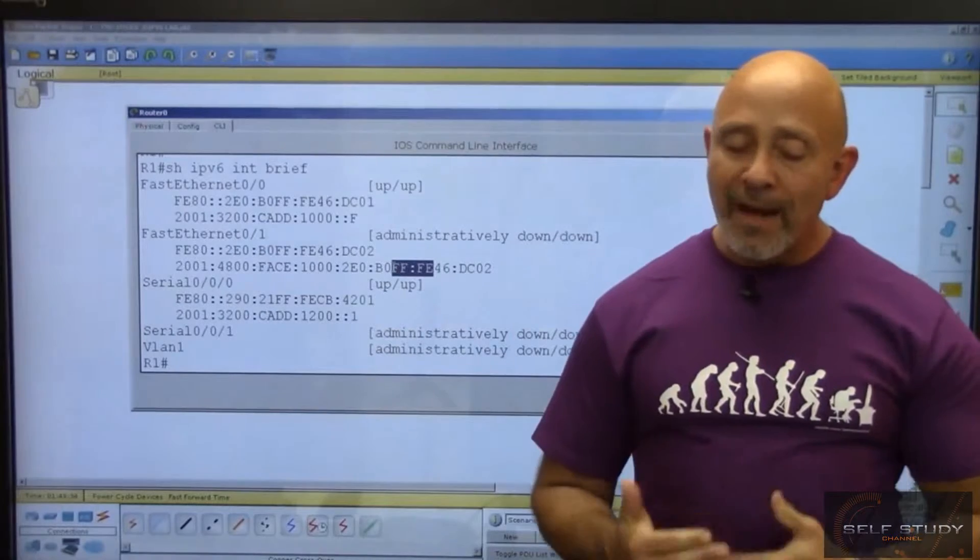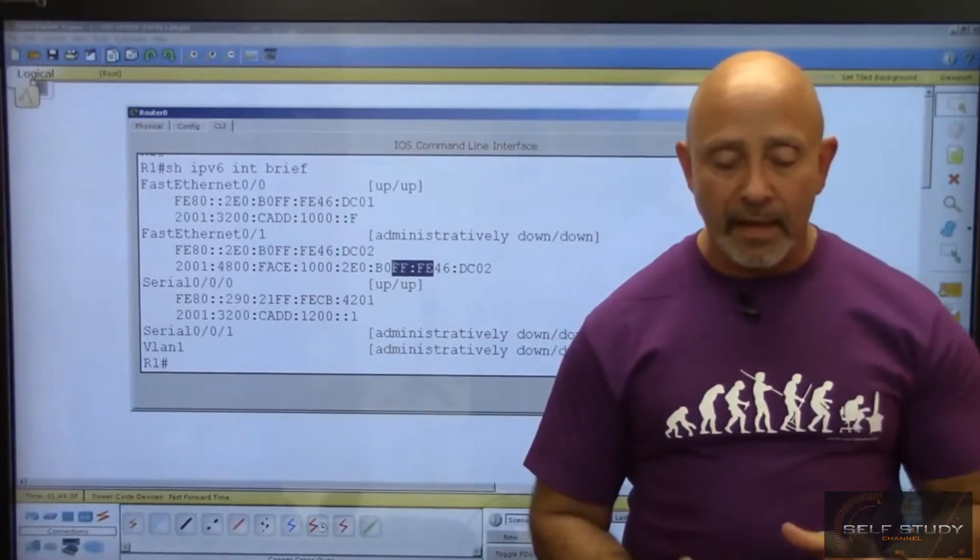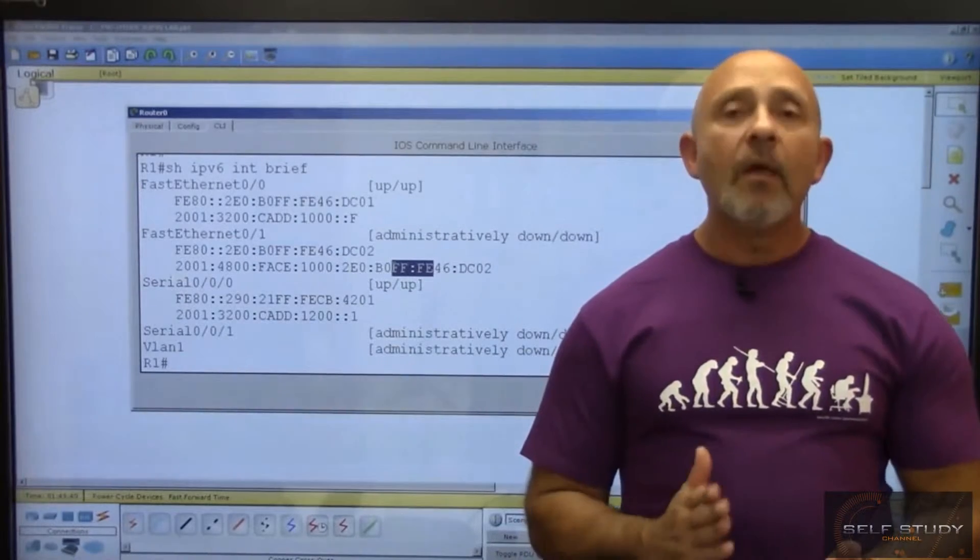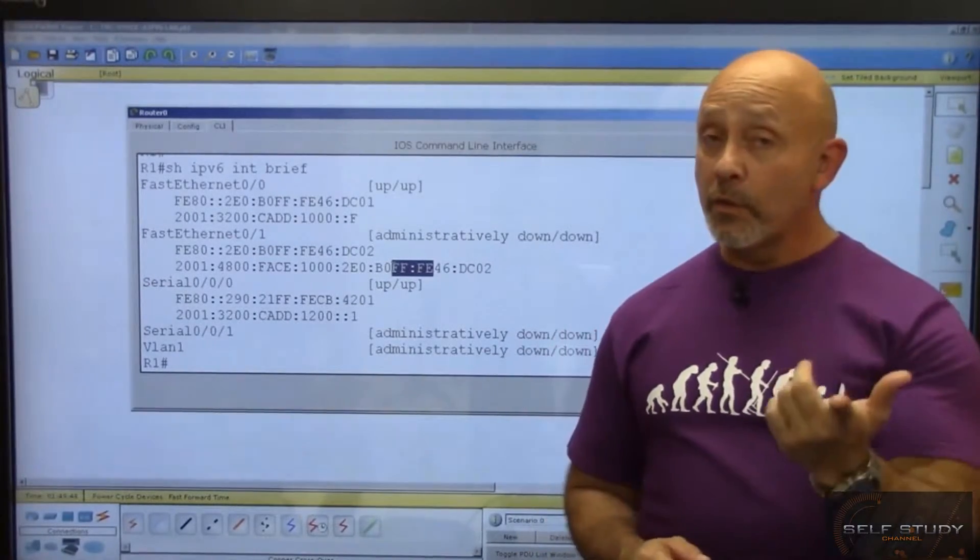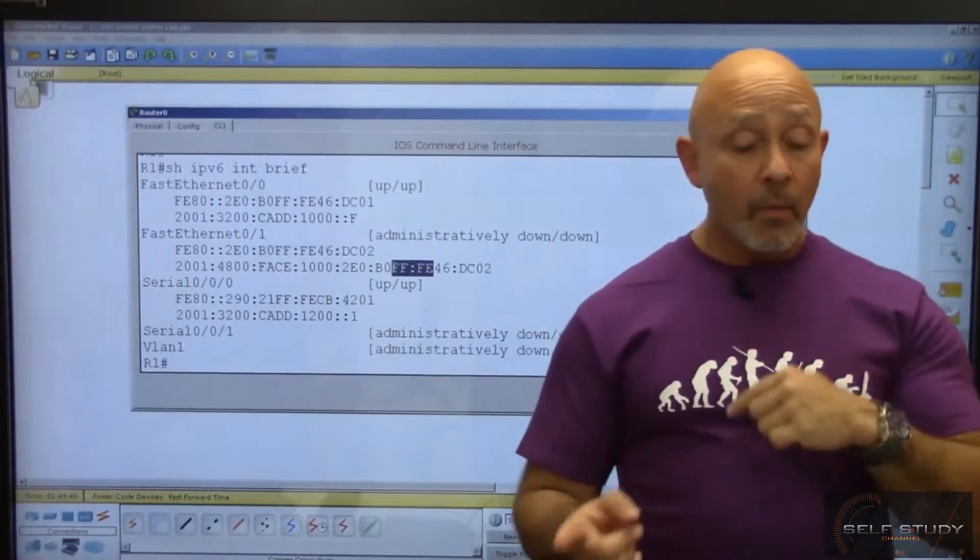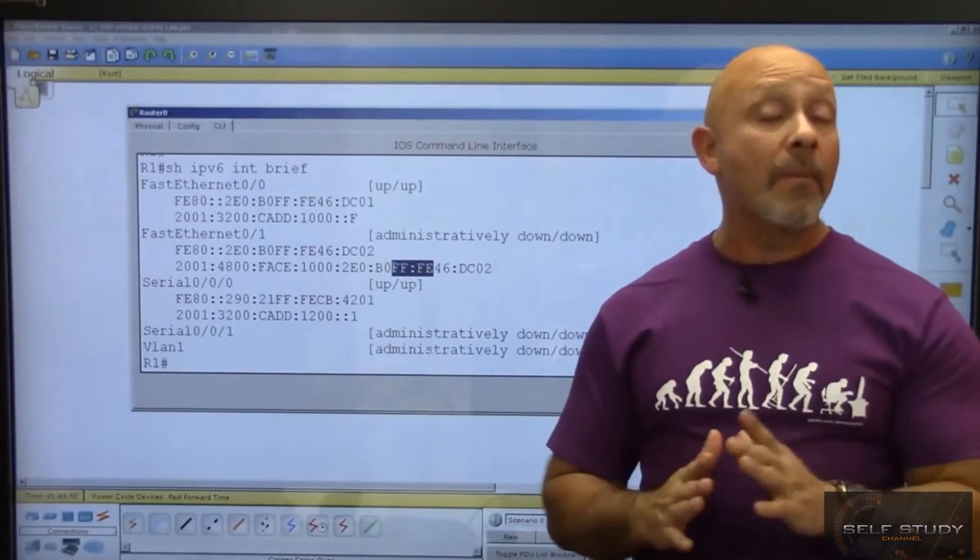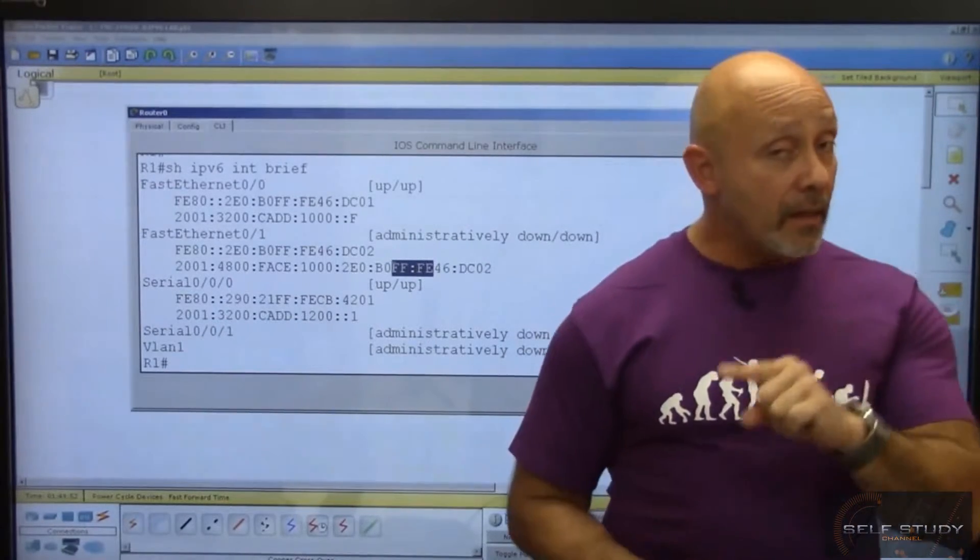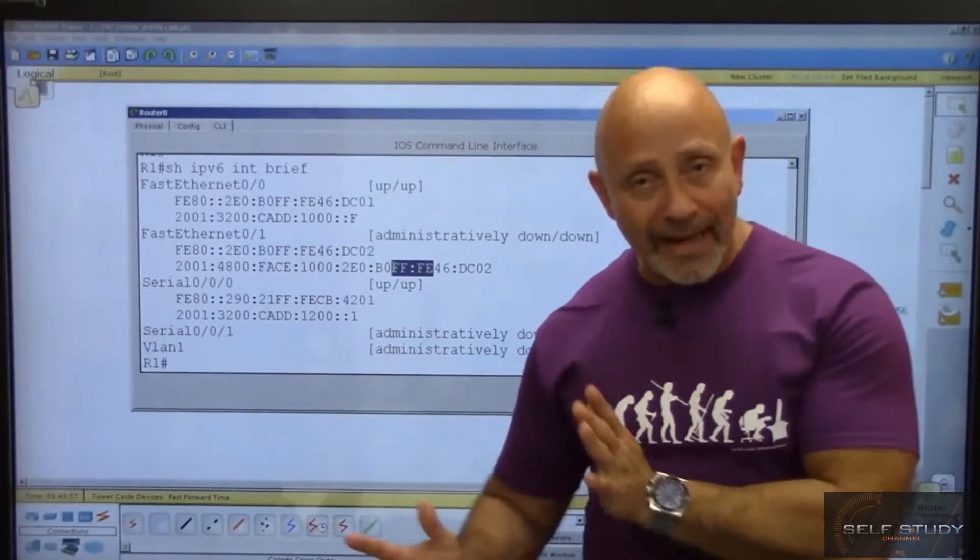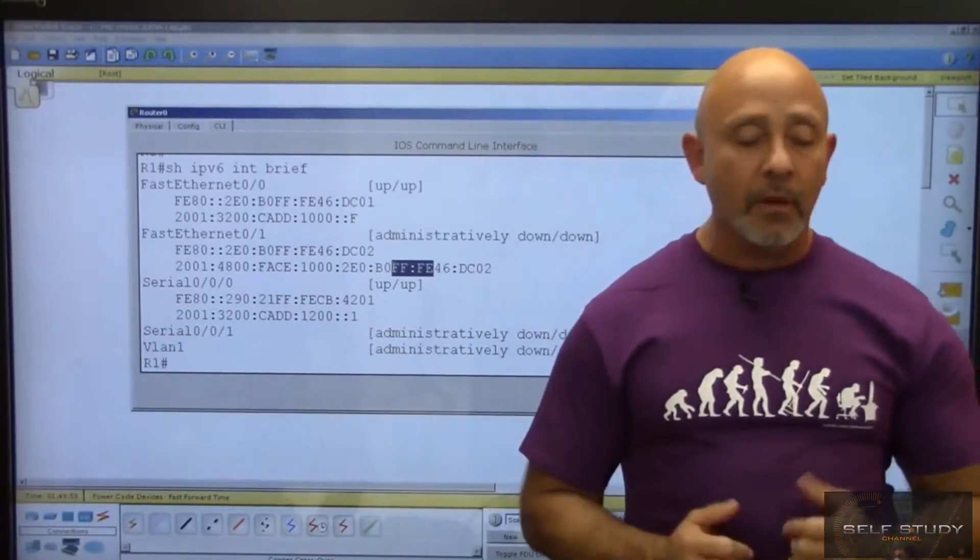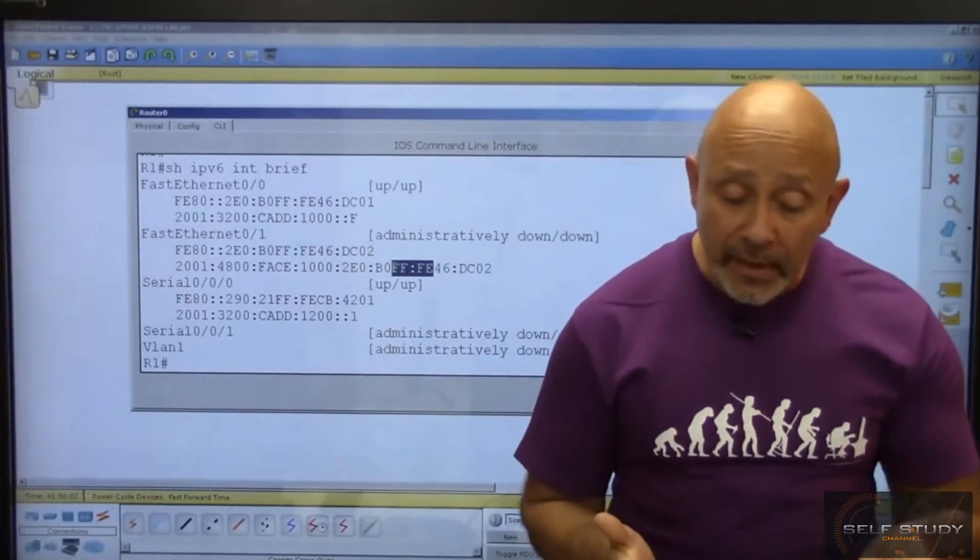Not to get too deep on it because that number two does mean something, the universal bit and all that, no need to get into that. What you need to understand is auto-configuration: you're using the EUI-64 which is going to use the FFFE padding to create from a 48-bit MAC address into a 64-bit MAC address for my interface ID portion of the IPv6 address. That's what that's for.